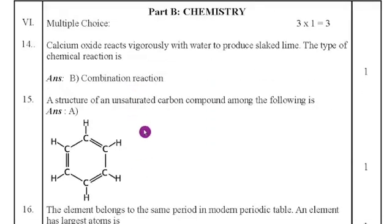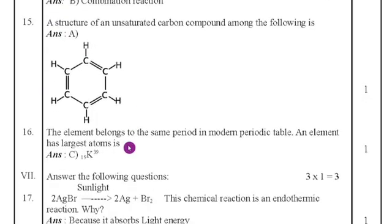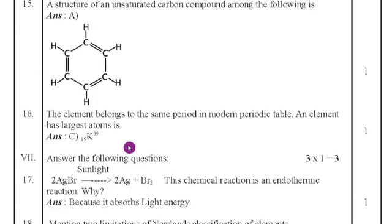The next part is part B chemistry fourth main. Fourteenth question calcium oxide reacts vigorously with water to produce slaked lime. The type of calcium reaction is, the answer is combination reaction option B is the right answer. Fifteenth question a structure of an unsaturated carbon compounds among the following is that is benzene option A is the right answer. Directly I given one answers.